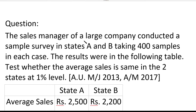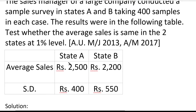The sales manager of a large company conducted a sample survey in states A and B, taking 400 samples in each case. The results are given in the following table. Test whether the average sales is the same in the two states at one percentage level of significance. In state A, average sales is 2,500 and standard deviation is 400. In state B, average sales is 2,200 and standard deviation is 550.